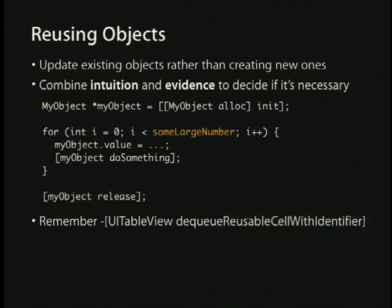DequeueReusableCell withIdentifier is an example of this. The reason it's such a big win is that the cost of creating table view cells is almost entirely in the creation and initialization of the backing store — the creation of all sub views and all of the memory drawn into those sub views can be really expensive. But the cost of just redrawing a single line of text in it is not very much — it's dwarfed by the cost of allocating the entire cell hierarchy. So if we can reuse the entire table view cell and all of its sub views and just redraw a line of text in it, that's where we get the performance win from dequeueReusableCell.